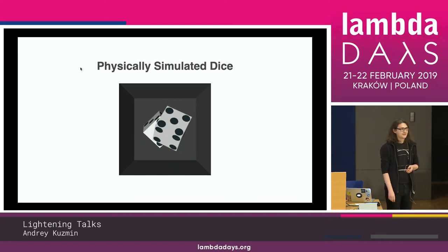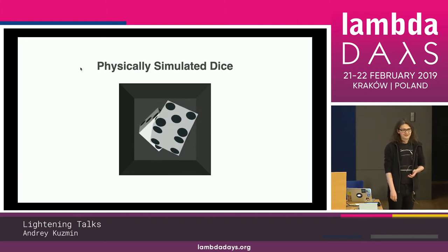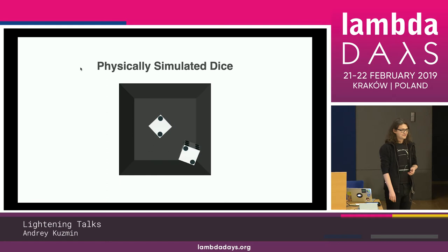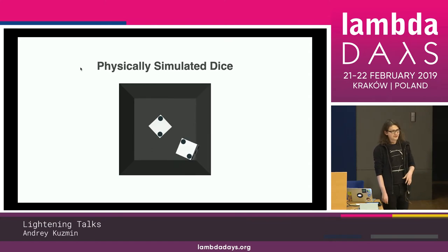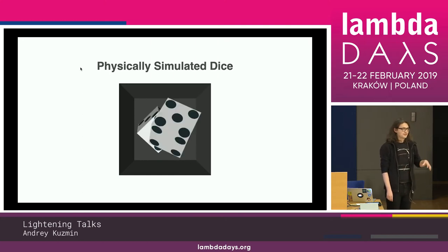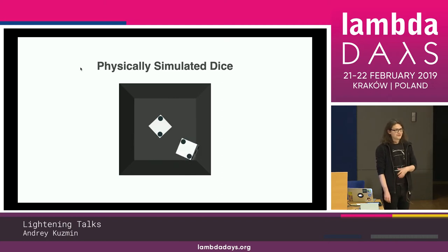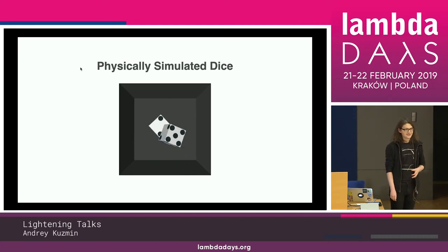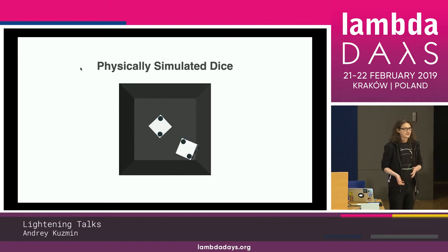I had no idea about physics, about computational physics, or what it takes to make such a thing. I looked at the existing implementation in Cannon.js and JavaScript, and I tried to port the code to ELM. It was very challenging, because porting mutable object-oriented code to functional code that only has pure functions and immutable data structures requires reshuffling a lot of things, and also learning about these things in the order they should happen.